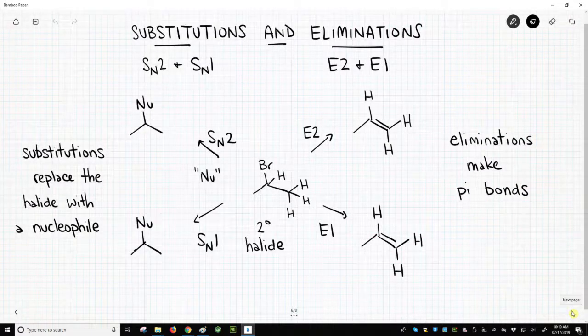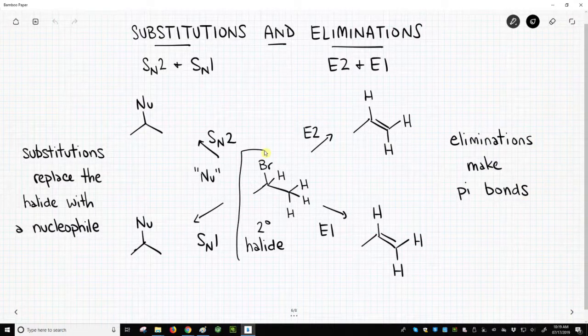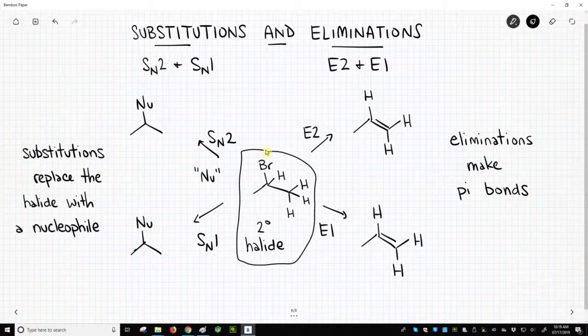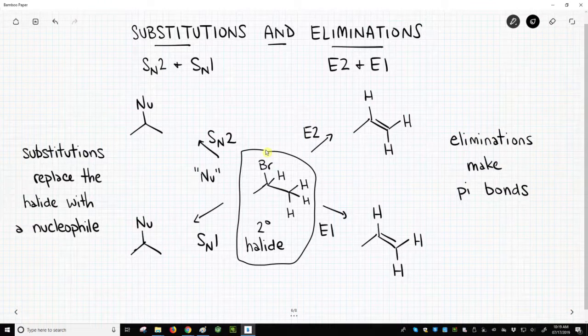On the screen, it's kind of hidden, but in the middle here, this is our alkyl halide. In this case, it's a secondary halide, a secondary bromide. And this halide can undergo all four of these reactions.